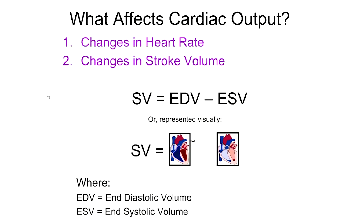Now that we've defined cardiac output and the formula for calculating it, I want to talk about some things that, based mathematically on this formula, can cause cardiac output to change — either cause increases or decreases in cardiac output. Cardiac output equals heart rate times stroke volume, so effectively anything that changes the heart rate or anything that changes the stroke volume is going to cause a change in the overall cardiac output.